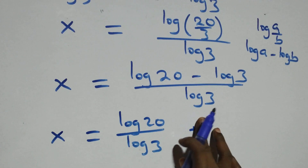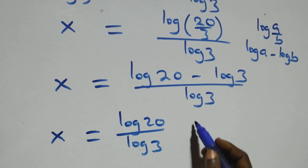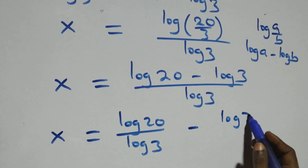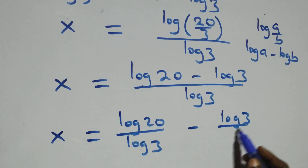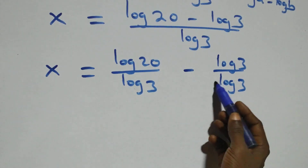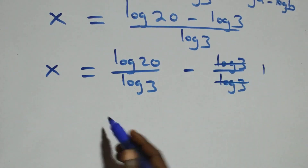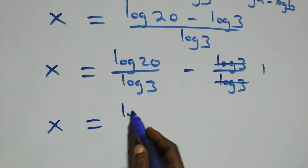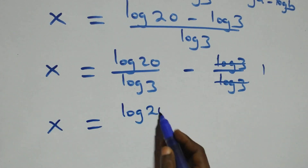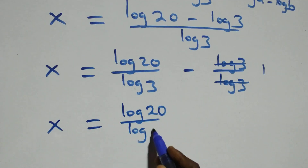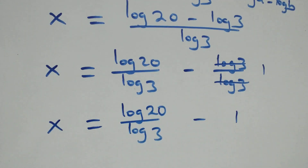Sorry — we have a minus here. That's minus log three over log three. Log three cancels, leaving one, so x equals log twenty over log three minus one.